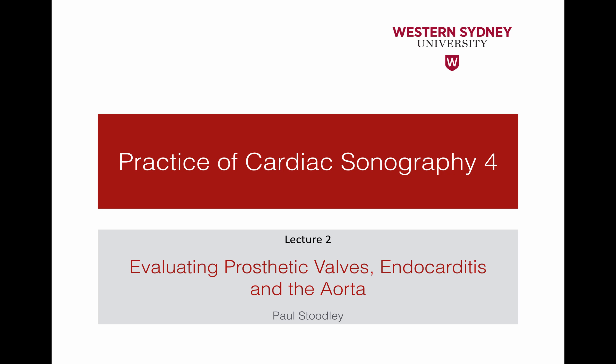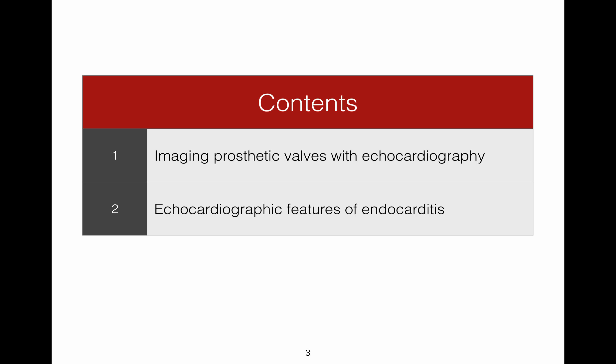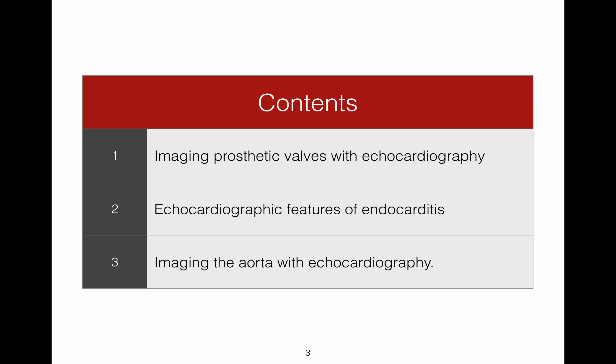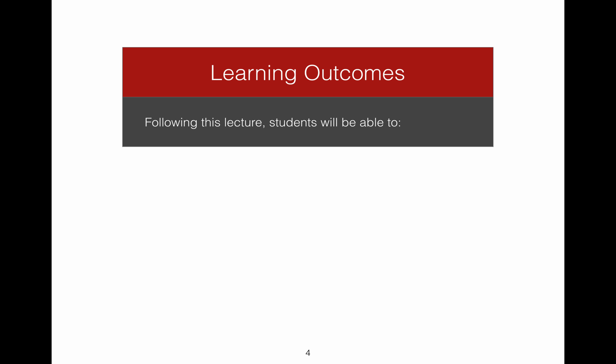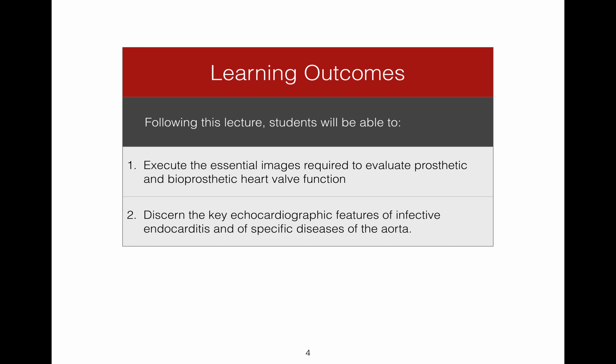Lecture 2 in the Practice of Cardiac Sonography 4 unit is entitled Evaluating Prosthetic Valves, Endocarditis, and the Aorta. The contents of the lecture are: 1. Imaging Prosthetic Valves with Echocardiography; 2. Echocardiographic Features of Endocarditis; 3. Imaging the Aorta with Echocardiography. Following this lecture, you will be able to execute the essential images required to evaluate prosthetic and bioprosthetic heart valve function and discern the key echocardiographic features of infective endocarditis and of specific diseases of the aorta.